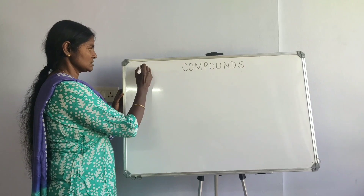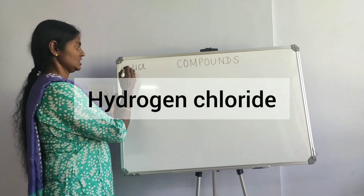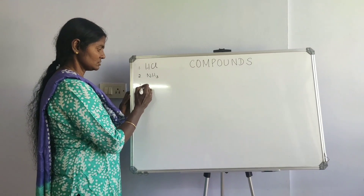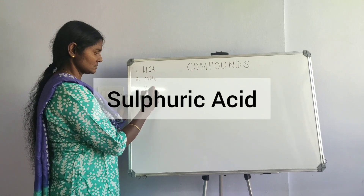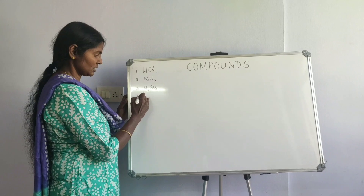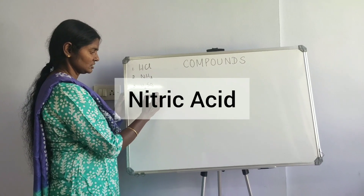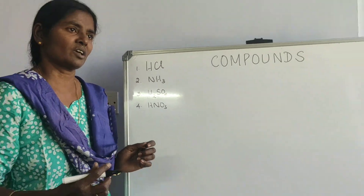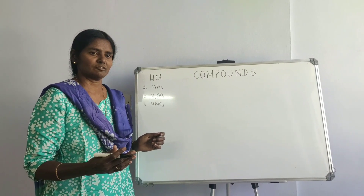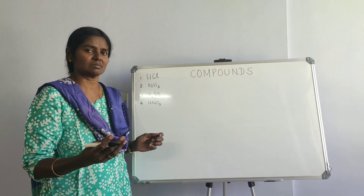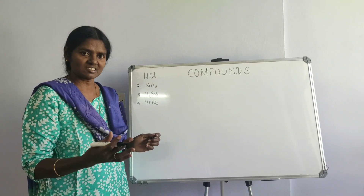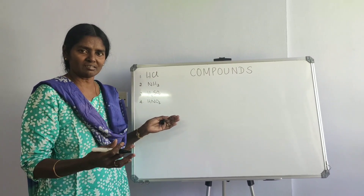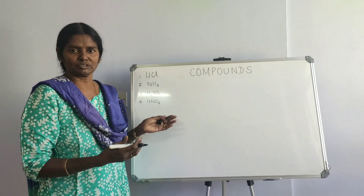The first one is hydrogen chloride. The second is ammonia. The third one is sulfuric acid. The fourth one is nitric acid. Just like the essential things your mother picks up — some onions, tomatoes, green chillies and potatoes — these four compounds are used everywhere. That is why we are here to learn about them.